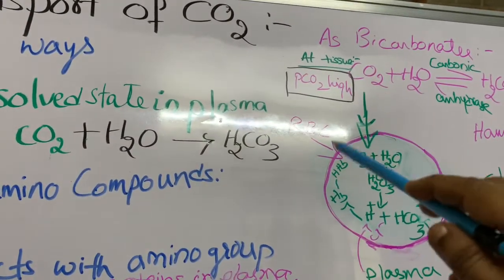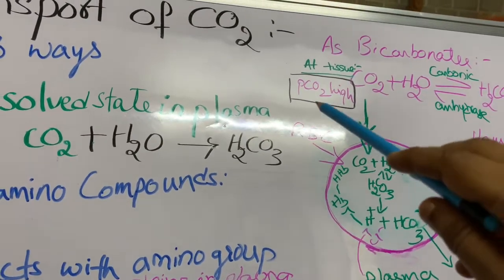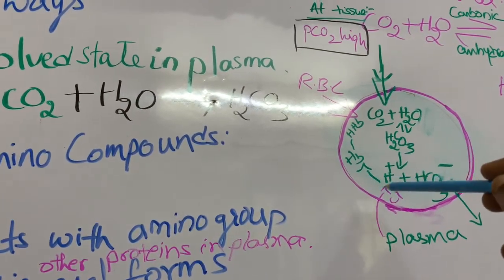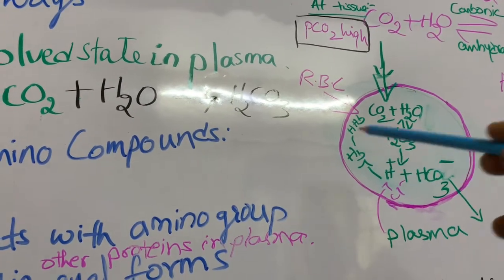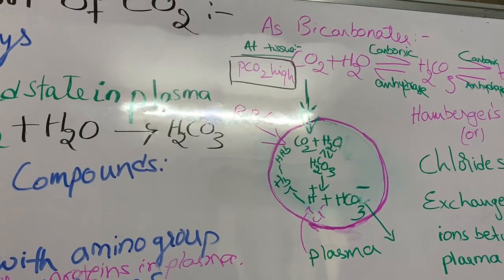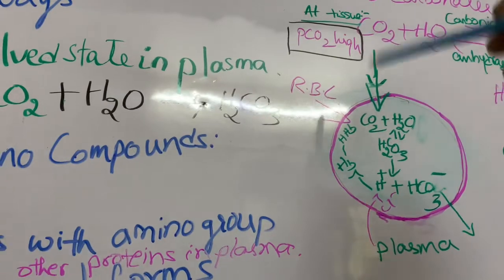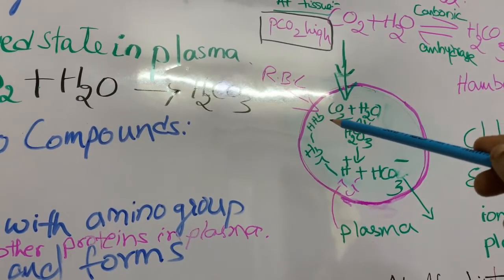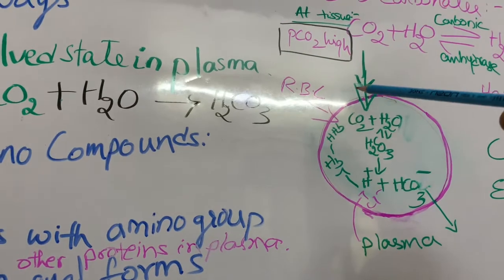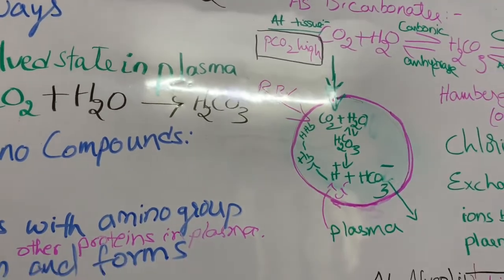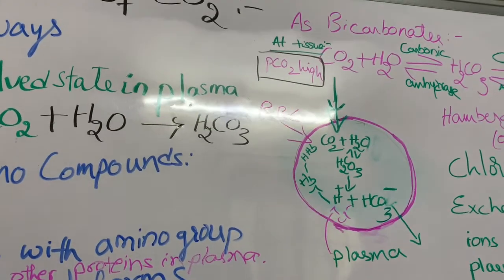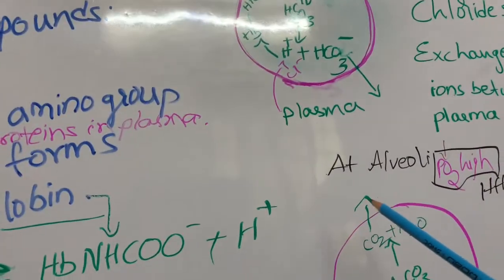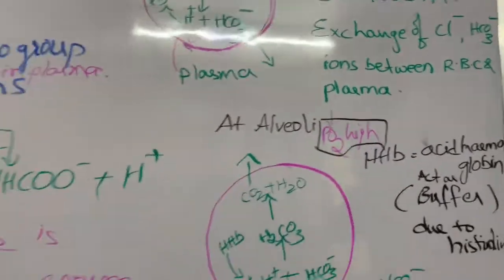Hemoglobin acts as a buffer and reduces the fall in pH value. At the tissue level, the partial pressure of CO₂ is high and partial pressure of O₂ is low. When hydrogen ions bind with hemoglobin, hemoglobin loses its affinity for oxygen and oxygen is liberated into the tissues. Due to the formation of acid hemoglobin, the oxygen-carrying capacity of hemoglobin reduces and oxygen is released from the RBC into the tissues.